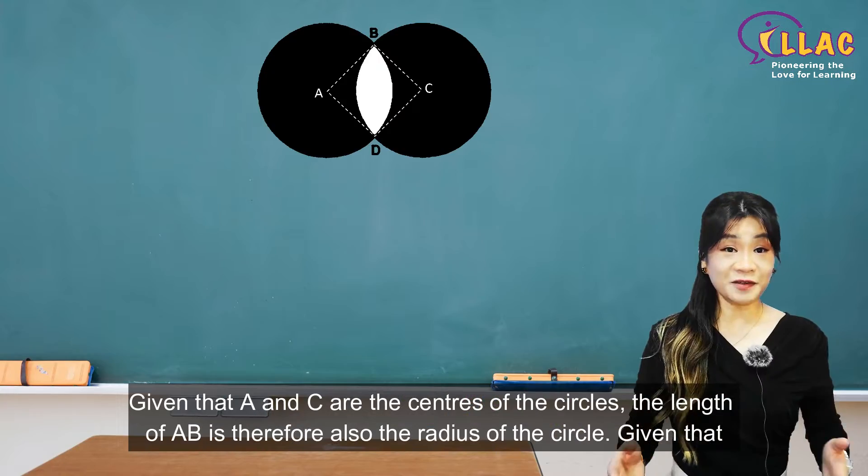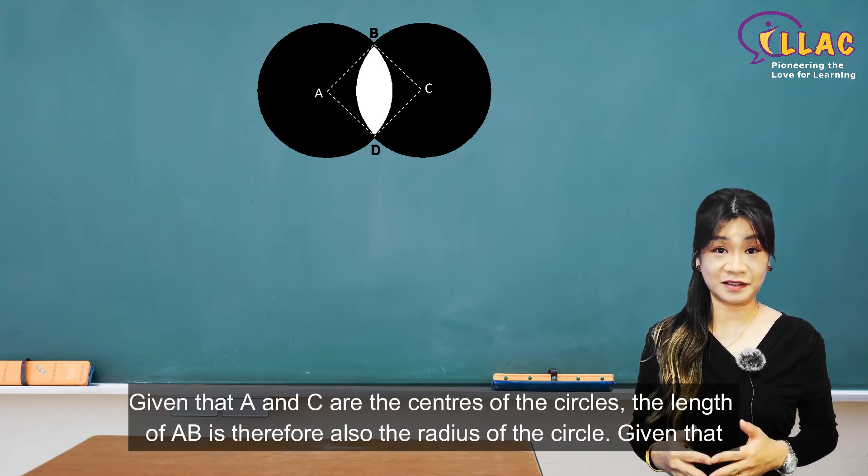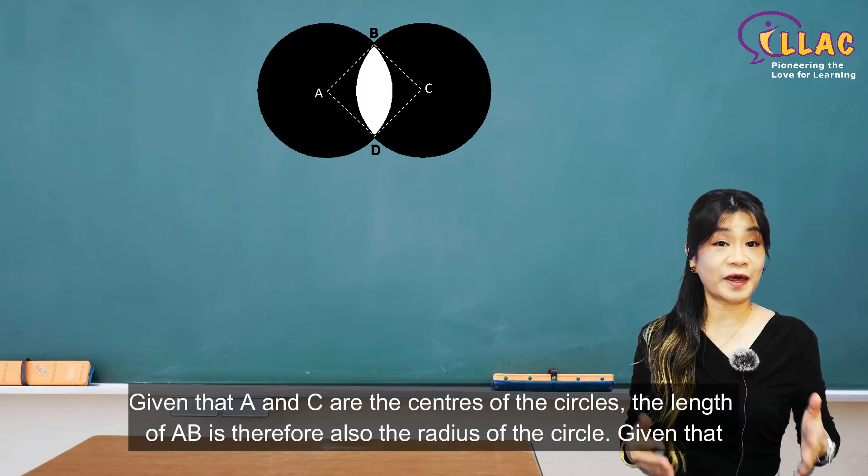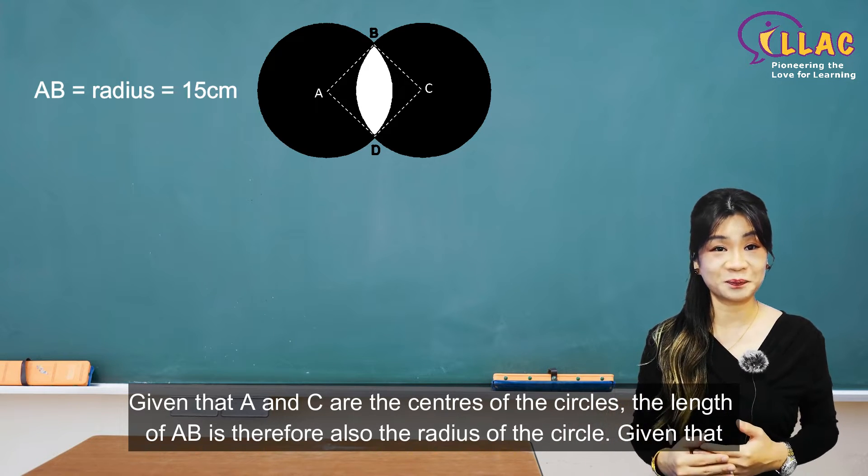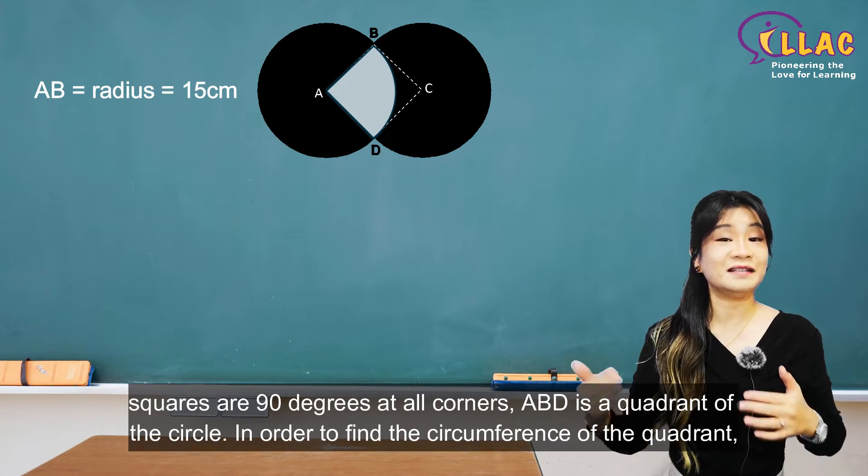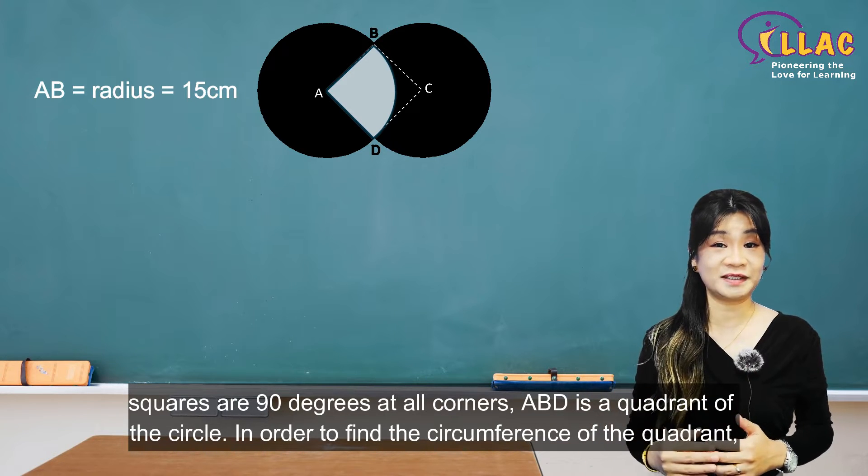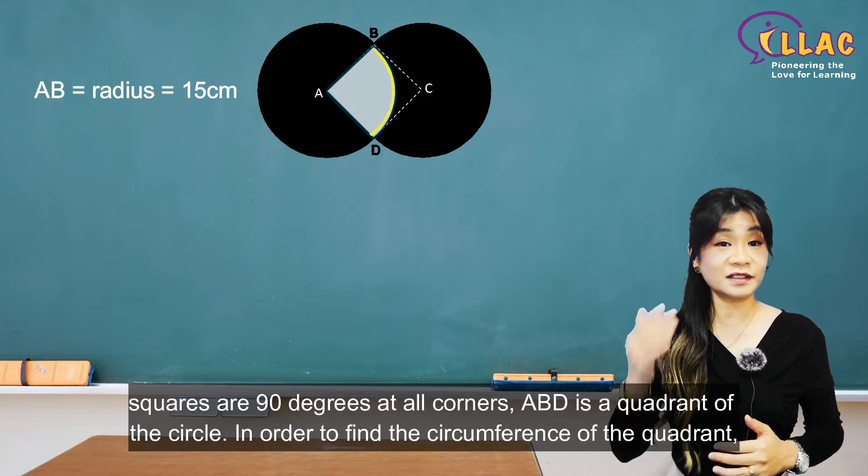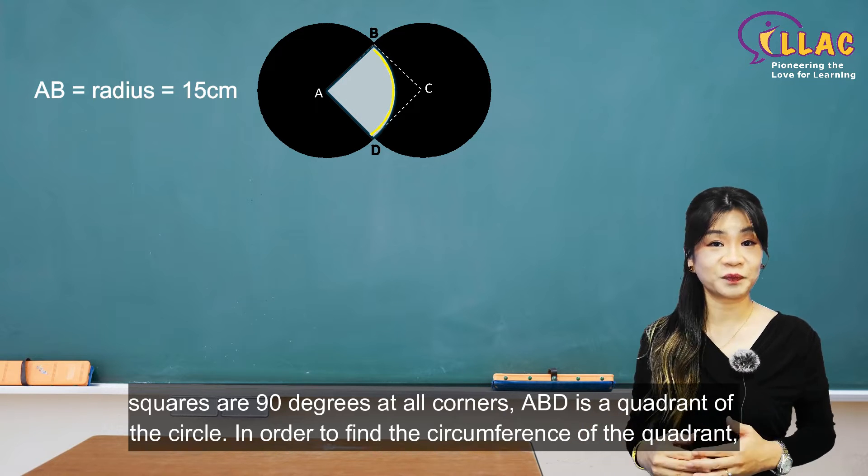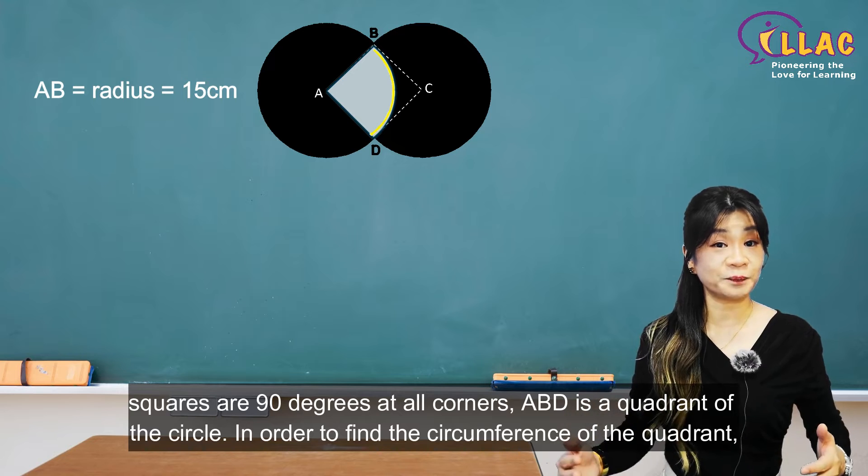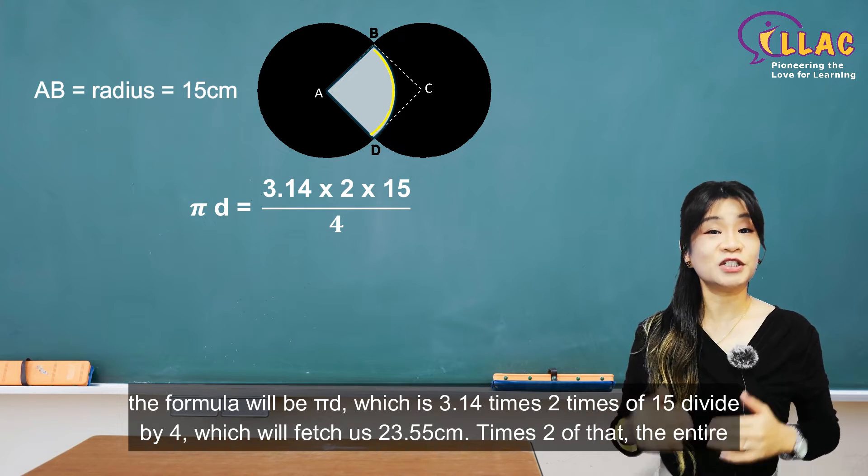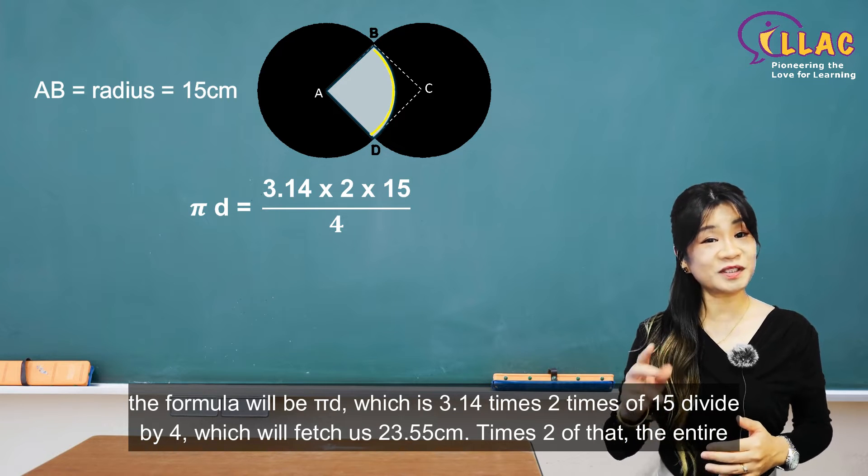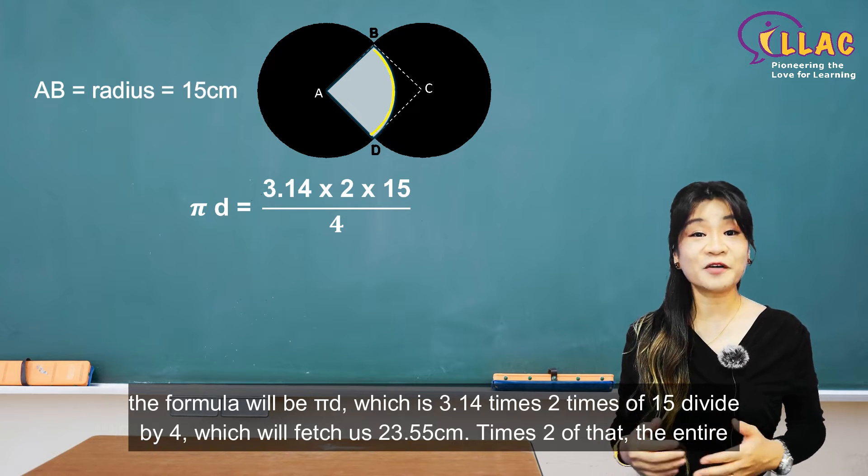Given that A and C are the centers of the circles, the length of AB is therefore also the radius of the circle. Given that squares are 90 degrees at all corners, ABD is a quadrant of the circle. In order to find the circumference of the quadrant, the formula will be pi D, which is 3.14 times 2 times 15, divided by 4.